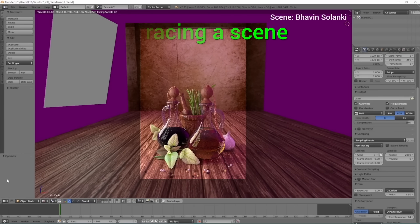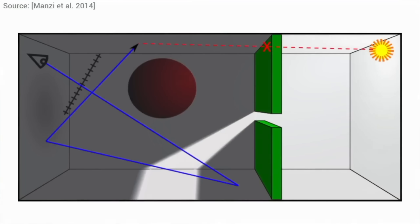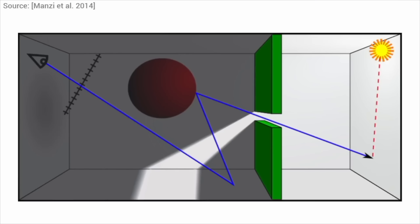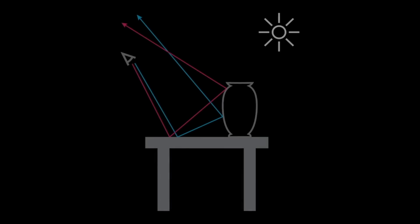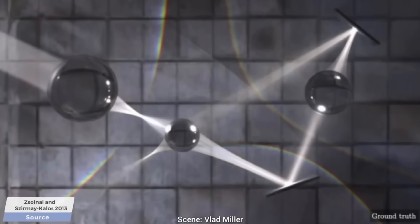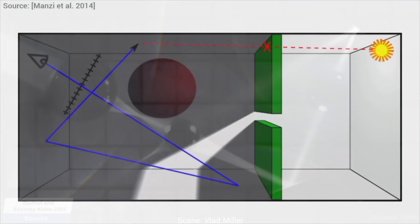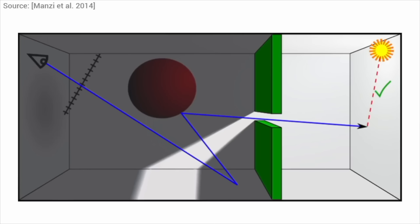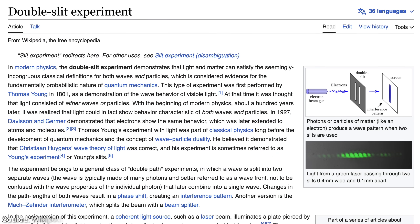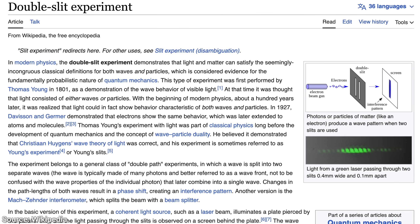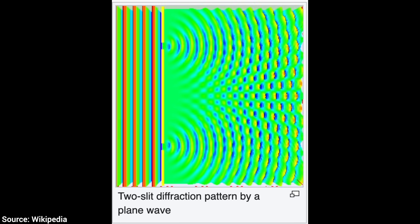You see, ray tracing means writing a simulation program that takes rays of light and bounces them around in the scene, creating a beautiful, photorealistic image. Note that I use the word rays of light. However, light is an electromagnetic wave. Yes, a wave, not a ray.